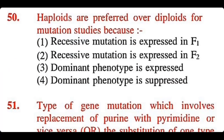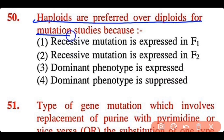Question 50: Haploids are preferred over diploids for mutation studies because: recessive mutation is expressed in F1, recessive mutation is expressed in F2, dominant phenotype is expressed, or dominant phenotype is suppressed. The correct answer is option 1. Haploids are preferred because recessive mutations are expressed in the F1 generation.